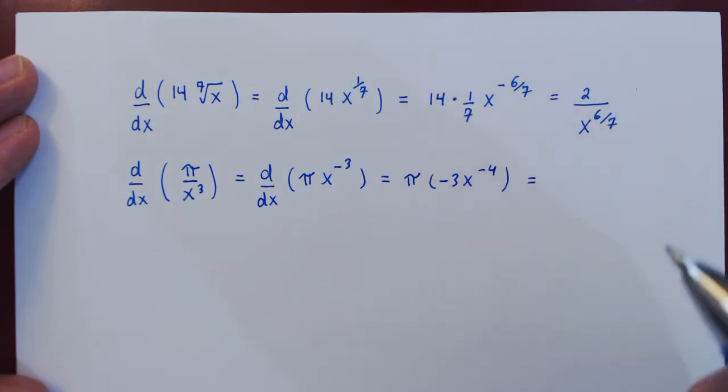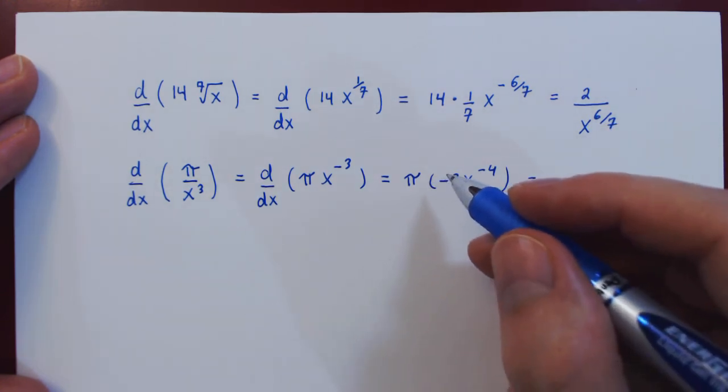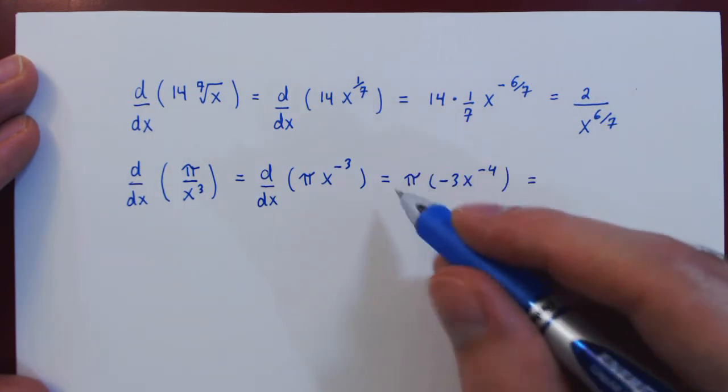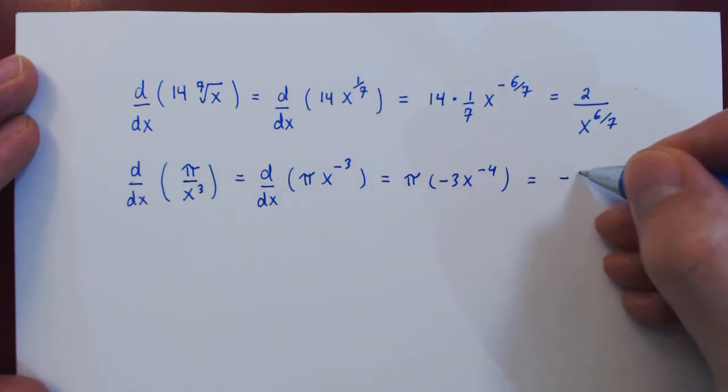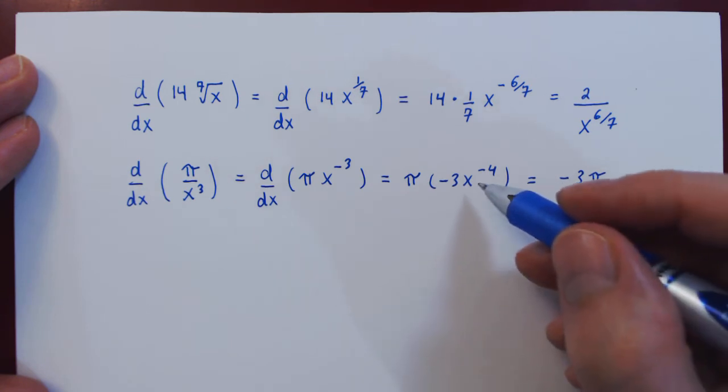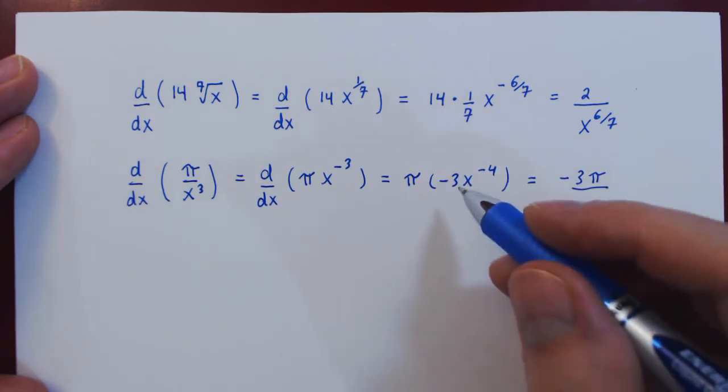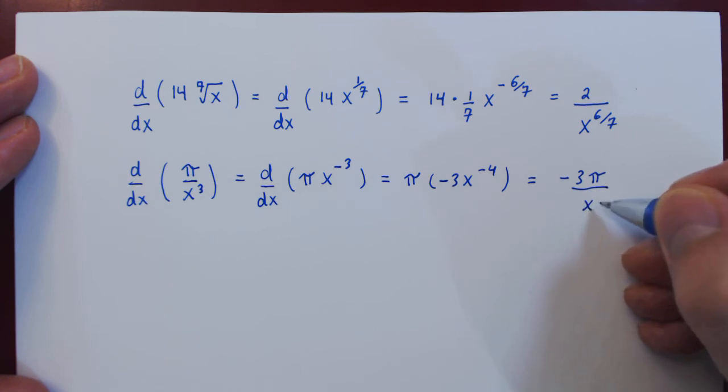And again, if we want positive exponents, on the numerator what remains is negative 3 pi, divided by x to the positive 4 after sending x down to the denominator.